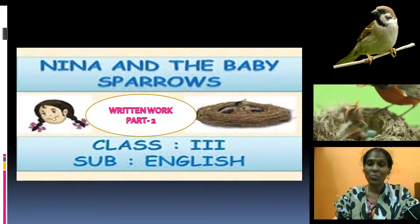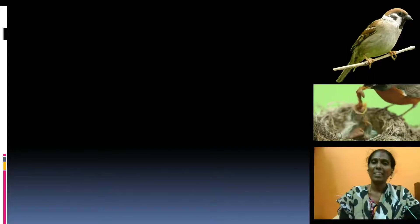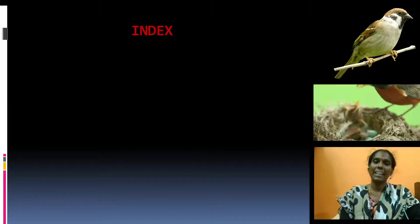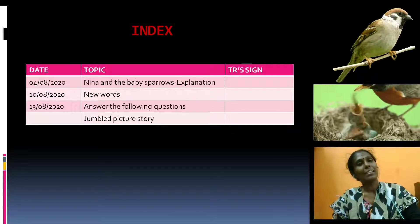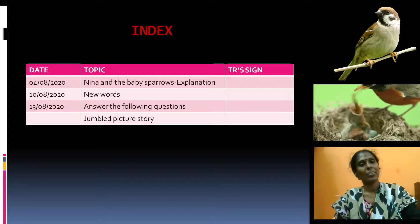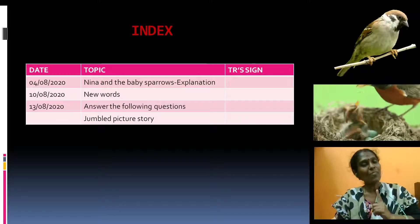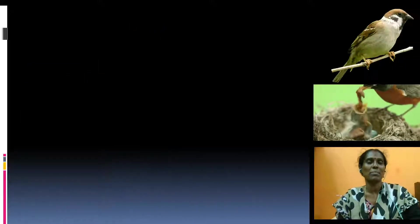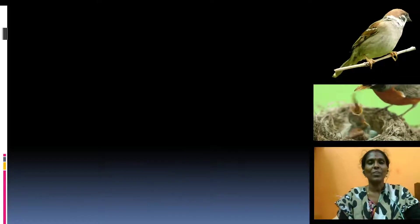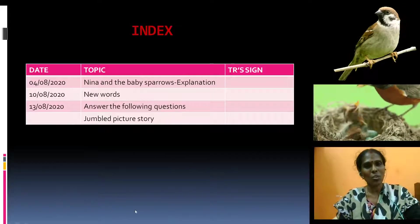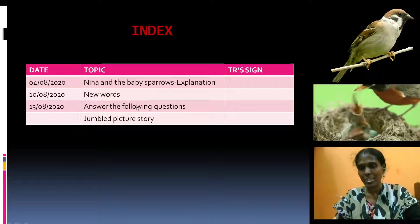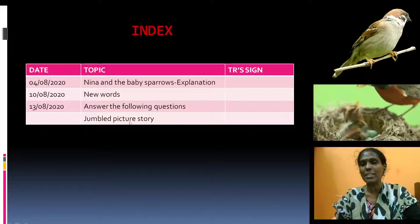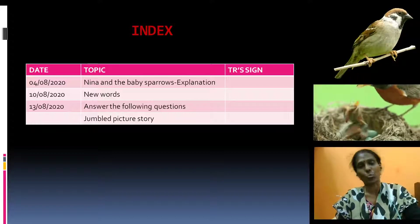First thing, what you should do? You should write the index. In the index, first you will write the date, then you should write the topic. The first concept for today is answer the following questions, and the second concept is jumbled picture story.